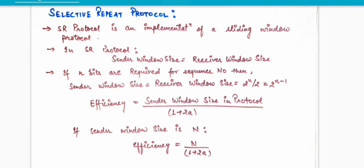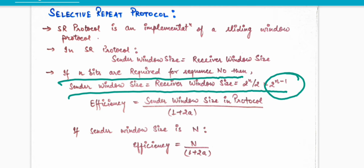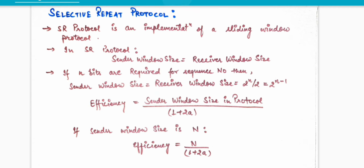In the selective repeat protocol, the sender window size is equal to the receiver window size — this is a very important point. If n bits are required for the sequence number, then the sender window size is equal to 2 to the power (n-1). Also, the total number of sequence numbers equals sender window size plus receiver window size.